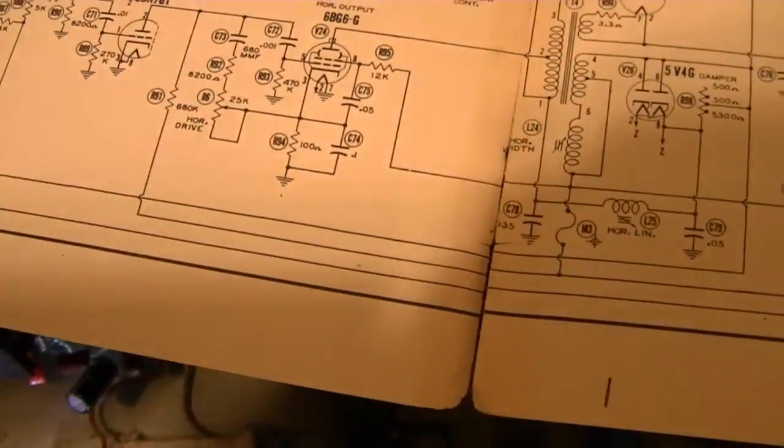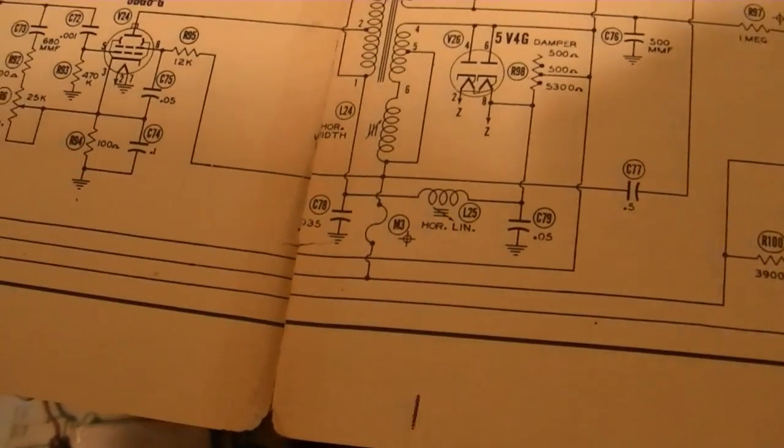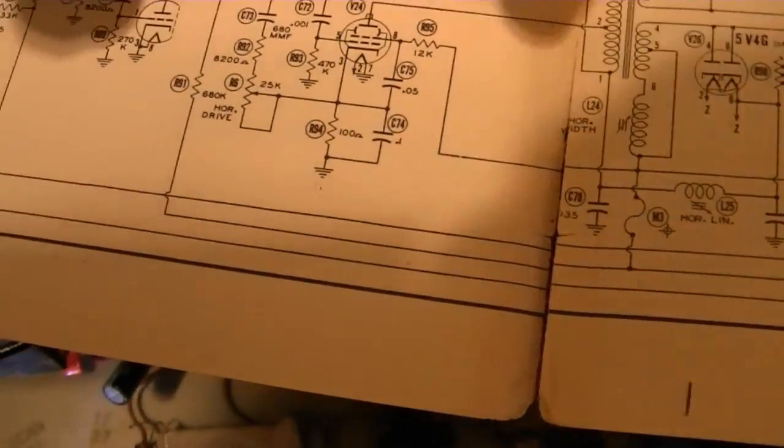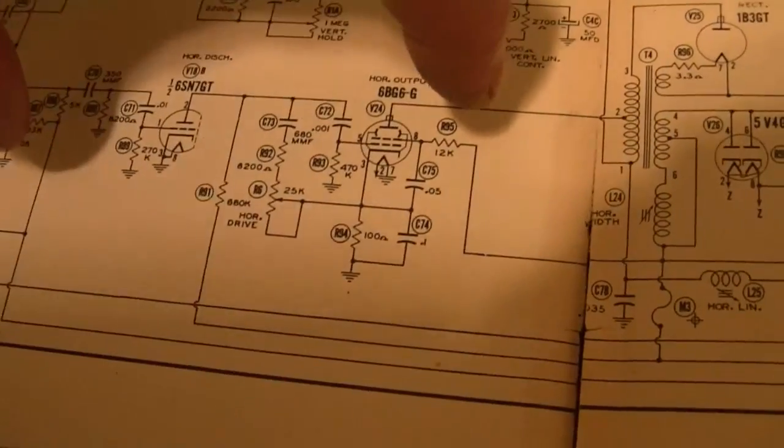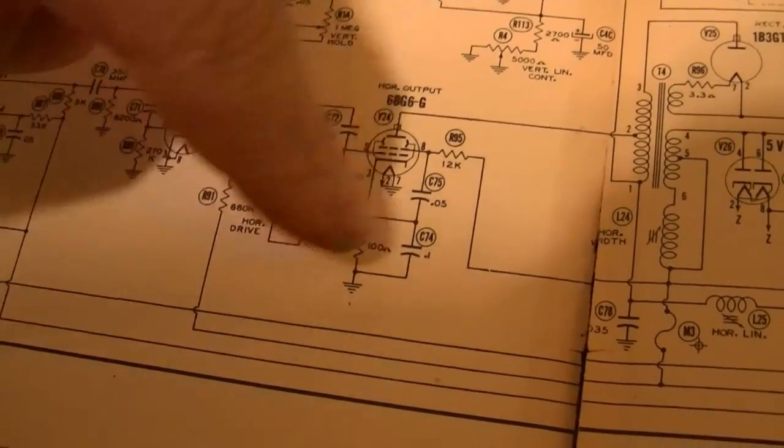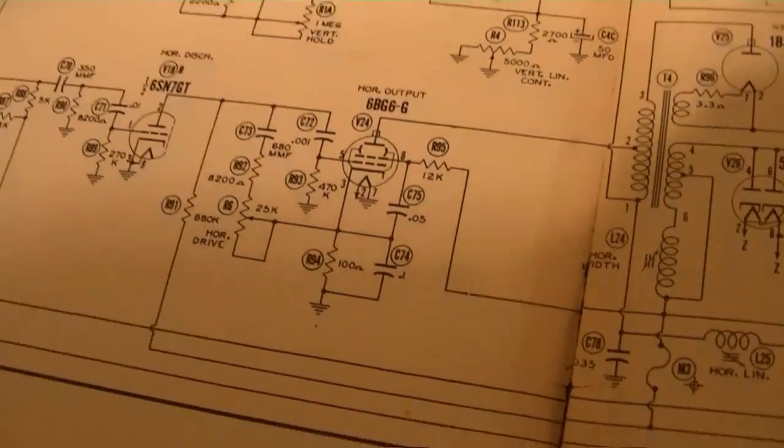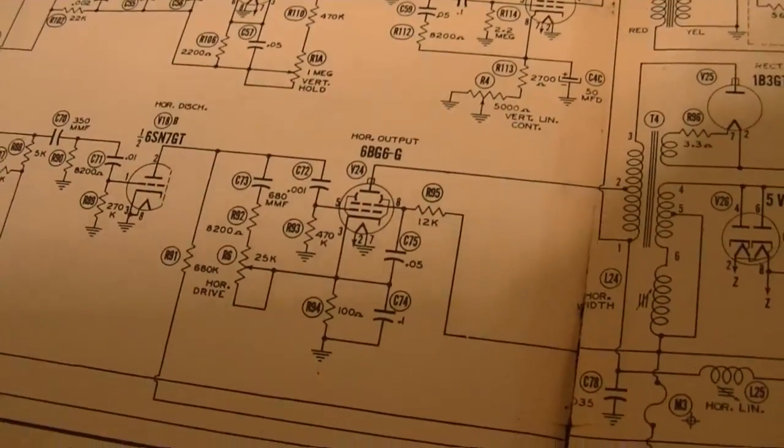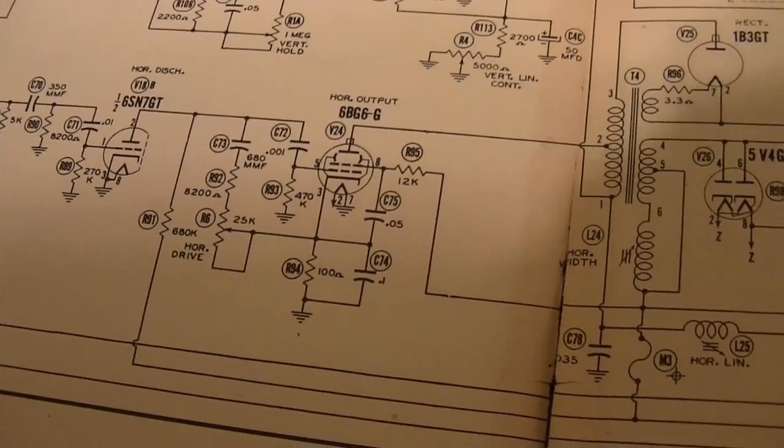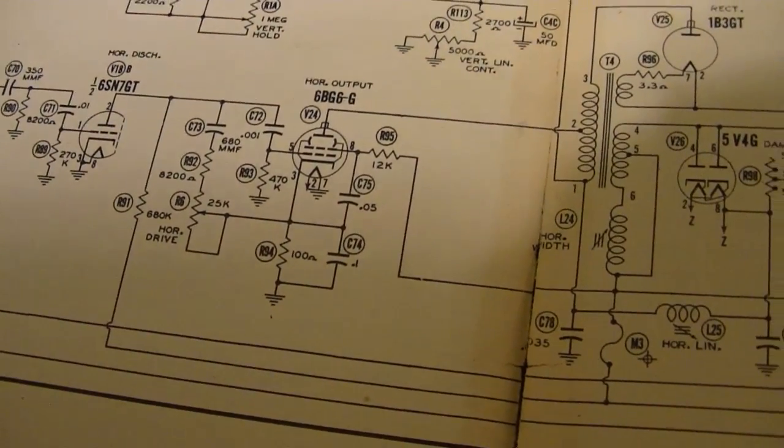It would be this stuff down in here. In particular, I want to take a look at this stuff. It's pretty critical stuff in a TV set. If this goes bad, bad things can happen, like burning up the flyback or horizontal output tube and so on. Start checking those resistors. Might as well just go ahead and replace those paper caps too.